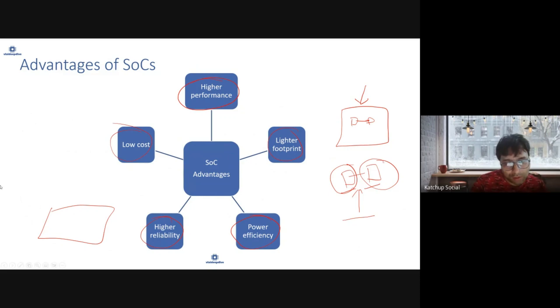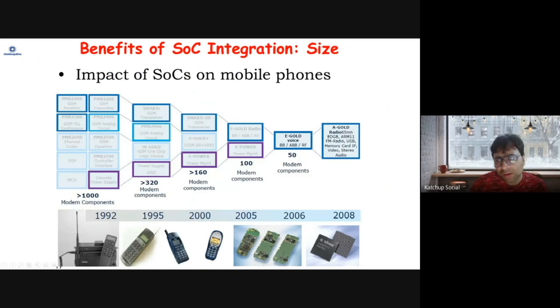Benefits include size. As you can see, these are the cell phones which used to be there. Bringing components together, merging them together, reduced the size over the years. This is talking about 2008 when the first iPhone was launched. Over the years it has continued to shrink further. So the first benefit is size can be reduced.